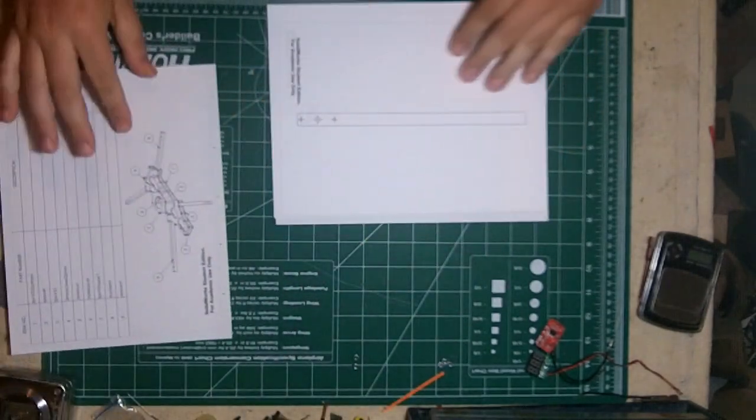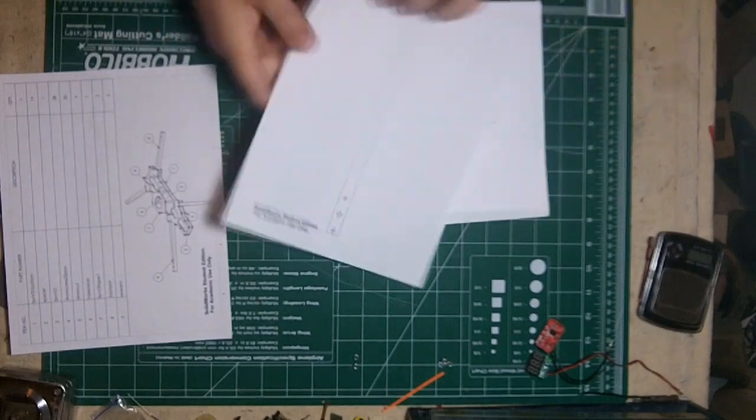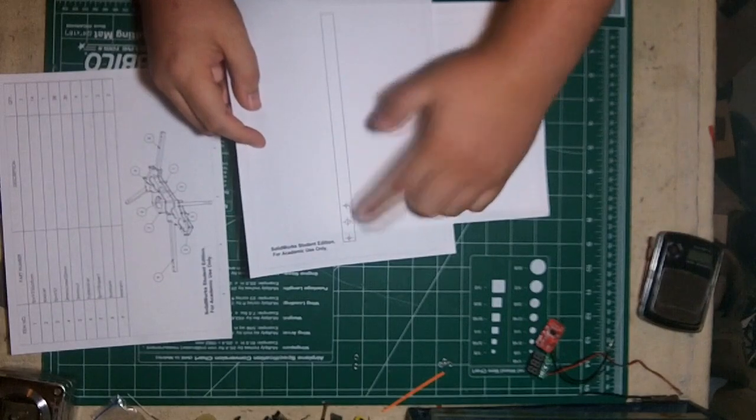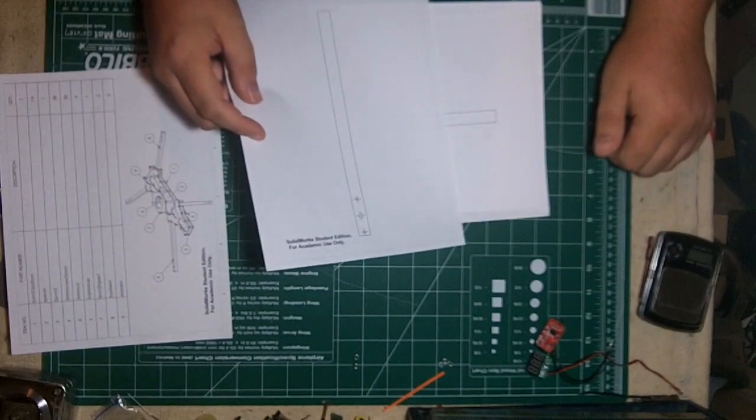You will get a template for the rear arms. This just gets cut out, laid on the poplar. You punch your holes and you drill them out, and that's all there is to it.